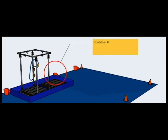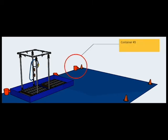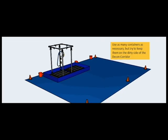Collect all the dirty towels and other items used during the decontamination process in container number 2. Use container number 3 to collect the decon team's disposable personal protective equipment. These containers should be closable to suppress the release of any vapors. Use as many containers as necessary, but try to keep them on the dirty side of the decon corridor.